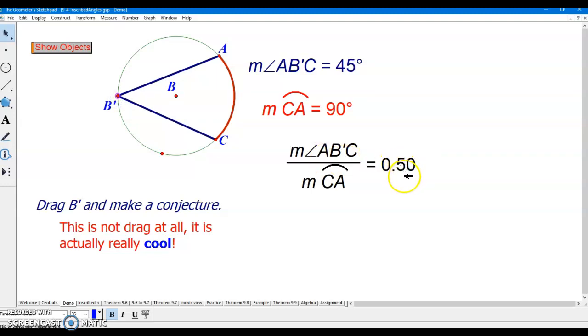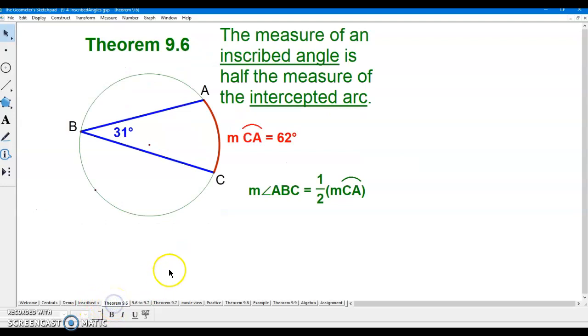They started out at exactly the same, so the ratio is 1, but now smaller, smaller, smaller. And as B' approaches the circle, what do you think is going to happen? Make your conjecture. What is that ratio going to be? 0.5. So what that's saying then is that this angle is half of the measure of this arc. So is that always true? Let's see.